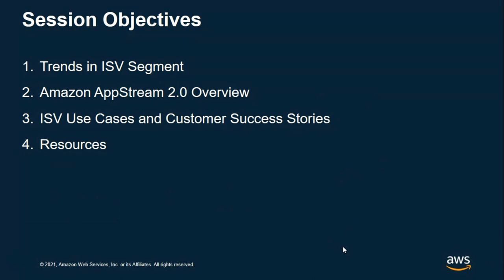We have four session objectives today. We'll begin by looking at the emerging trends we are seeing in the ISV segment, and how these trends are motivating ISVs and service providers to move to a SaaS delivery model and modernize their training, trial, and demo experience for their customers. We'll discuss the value proposition of SaaS on AWS, provide an overview of AppStream, and discuss use cases where ISVs are adopting AppStream. Our Multiview team will share learnings from their SaaS journey, and we'll share resources available for you to start your AppStream evaluation and deployment.